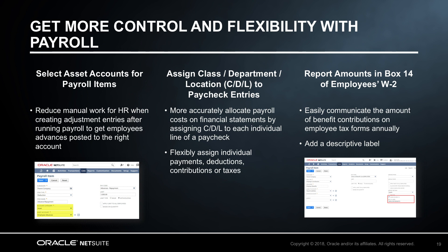With the 19.1 release, payroll customers will have granular control when posting payroll transactions to the GL. They'll no longer have to manually create adjustment entries after running payroll to get the employee advances to the right account. Instead, they can post earnings and deductions to asset accounts. SuiteScript is also supported using a new asset account field on a payroll item. Additionally, class, department, and location can be set for each individual line of a paycheck entry, including earnings, deductions, company contributions, and taxes. These values can even be set on the employee's timesheets and carried over onto the paycheck without any additional effort. Finally, payroll customers can now report amounts in box 14 of an employee's W-2 with a descriptive label, making it much easier to communicate on an employee's tax form how much was allocated to their plan on an annual basis.